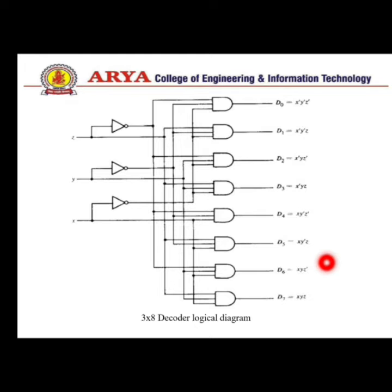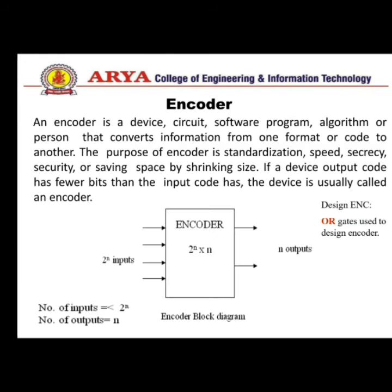The input variable may represent a binary number and the output represents the digit in the octal number system, so this also performs binary-to-octal conversion. Now the second topic is the encoder. An encoder is a digital circuit that performs the inverse operation of a decoder. It is a combinational circuit that converts binary information from 2-power-n input lines to n output lines.